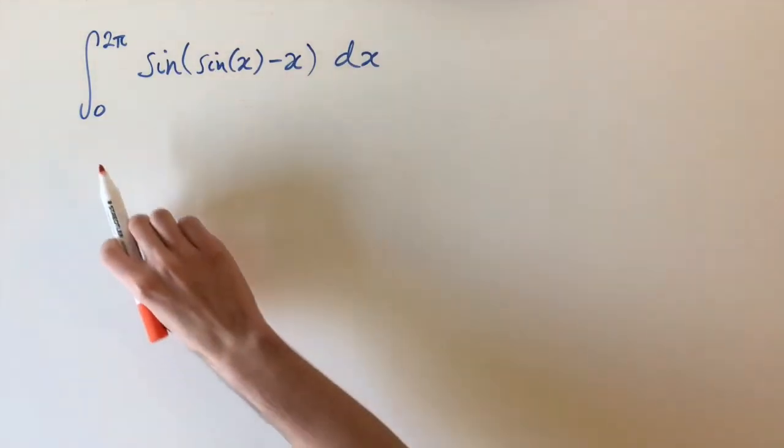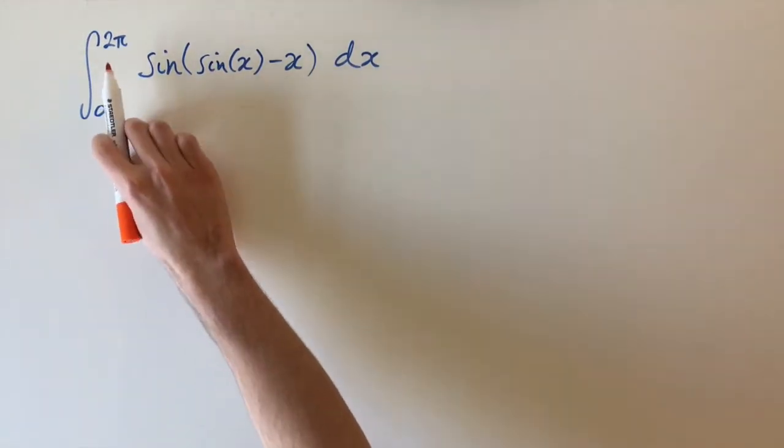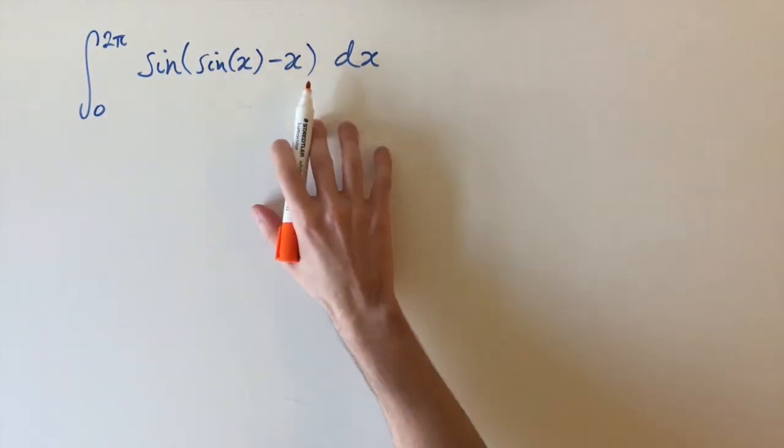Okay, we're looking at the integral between the limits of 0 and 2π of sin(sin(x) - x) dx.